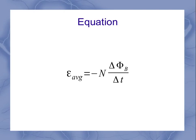So what's our equation for this? It's going to look like this, where EMF average is minus N delta phi B divided by delta t. Let's take this one symbol at a time. My little epsilon again is my EMF, and the subscript AVG tells me it's the average EMF.